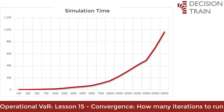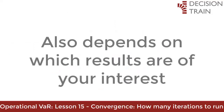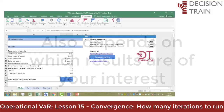In general, the more iterations you run, the longer it will take and the more accurate the output responses will be. Also, it depends on which results interest you the most. With our example of operational risk, we will illustrate these concepts and finally arrive at a satisfactory answer.